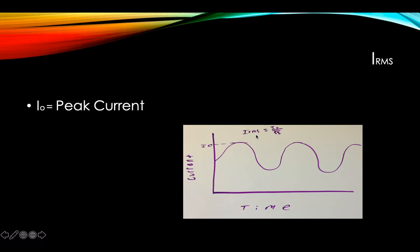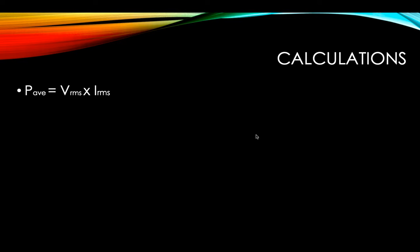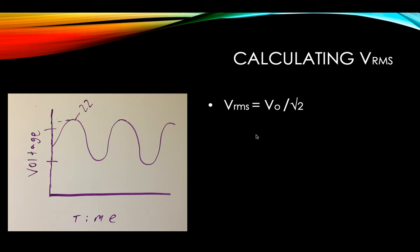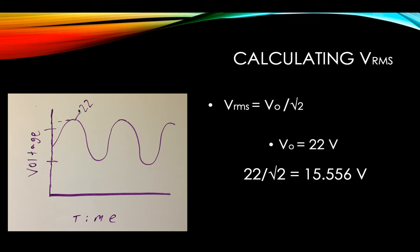Now that we know how to find V_RMS and I_RMS given those equations, we're going to do some calculations. The average power is equal to the V_RMS value times the I_RMS value. V_RMS equals V-naught over the square root of two, and I_RMS equals I-naught over the square root of two. We're going to start with voltage. We're going to say the peak voltage is 22 volts, so V-naught equals 22 volts. Plugging that into our equation: 22 divided by the square root of two equals 15.556 volts. That is our voltage root mean square value.